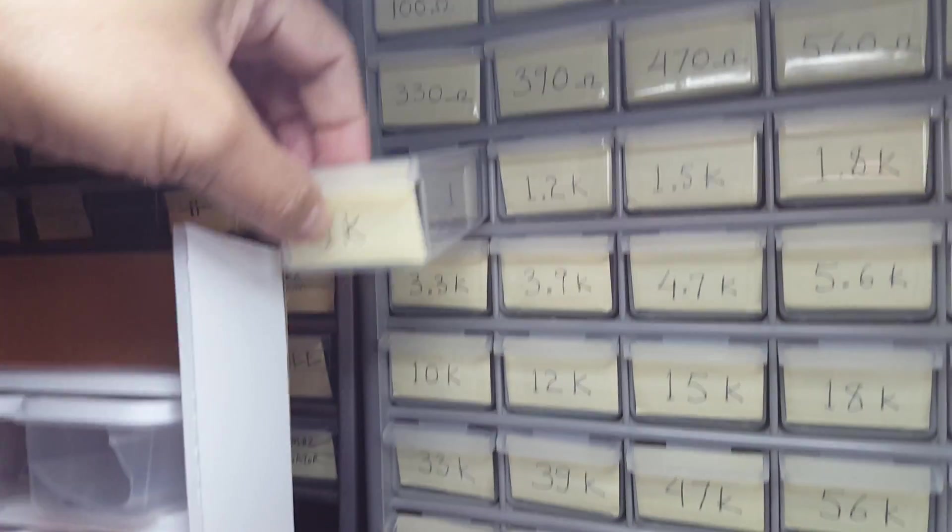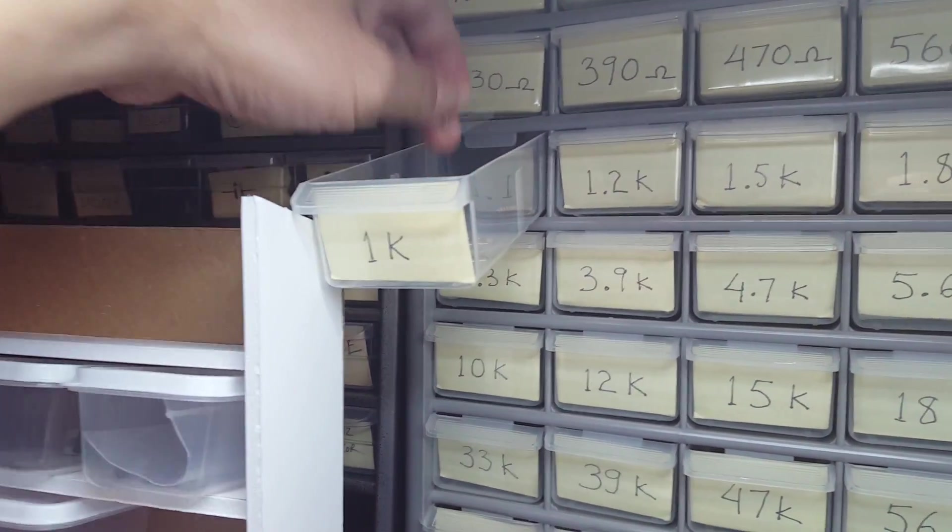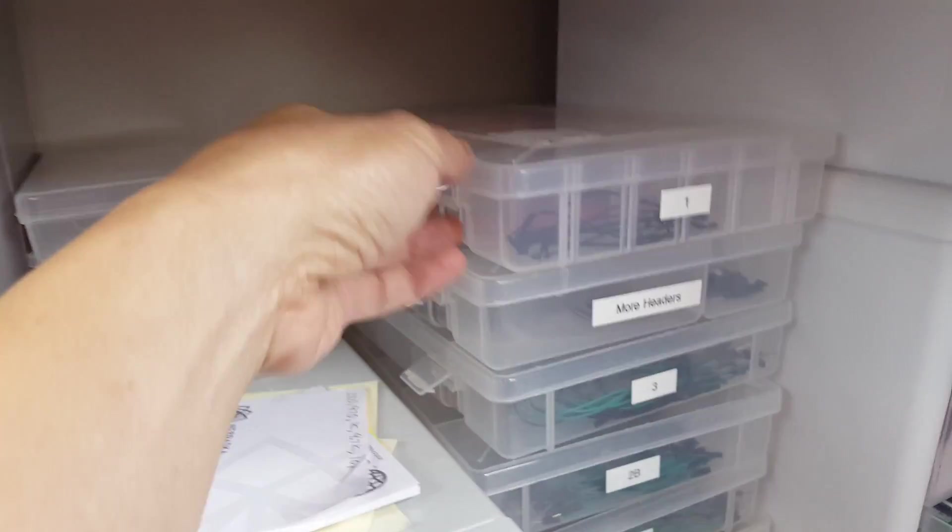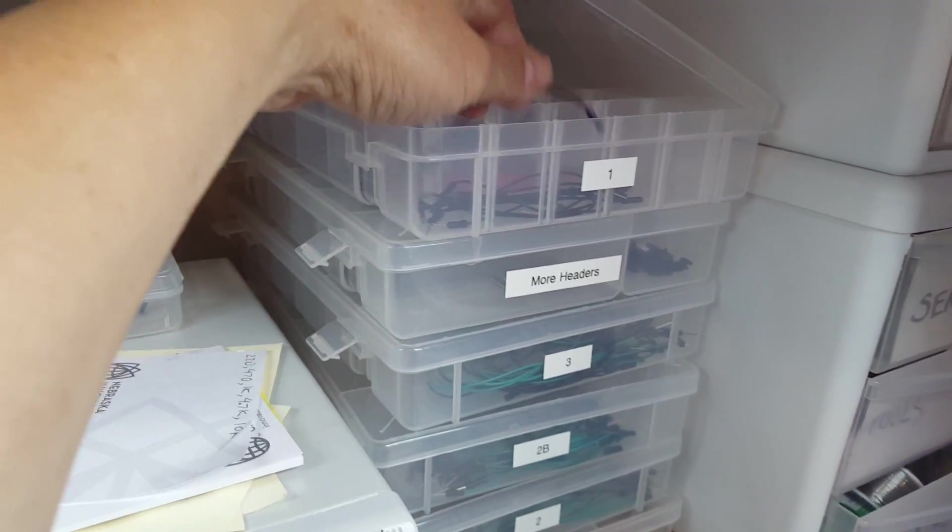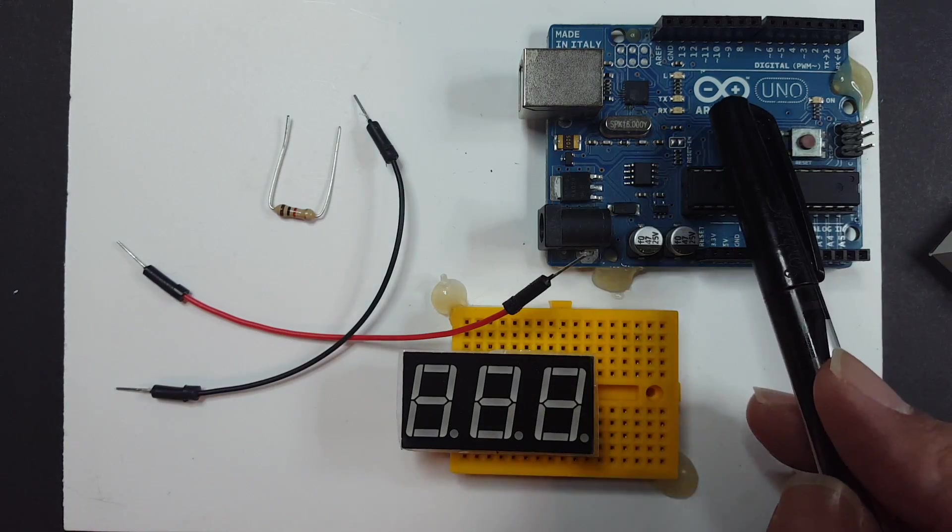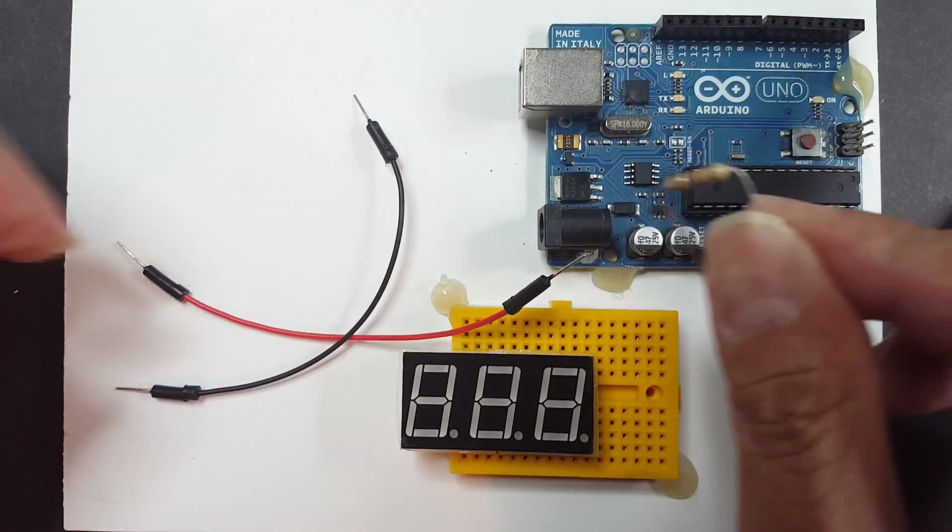Of course, since I bought this from China there is no data sheet or anything. I tried to Google the part number and found some apparently similar ones, but they only have one digit and I have three digits. So I'm just gonna wing it using an Arduino as my power supply and a 1k resistor as my current limiting resistor.